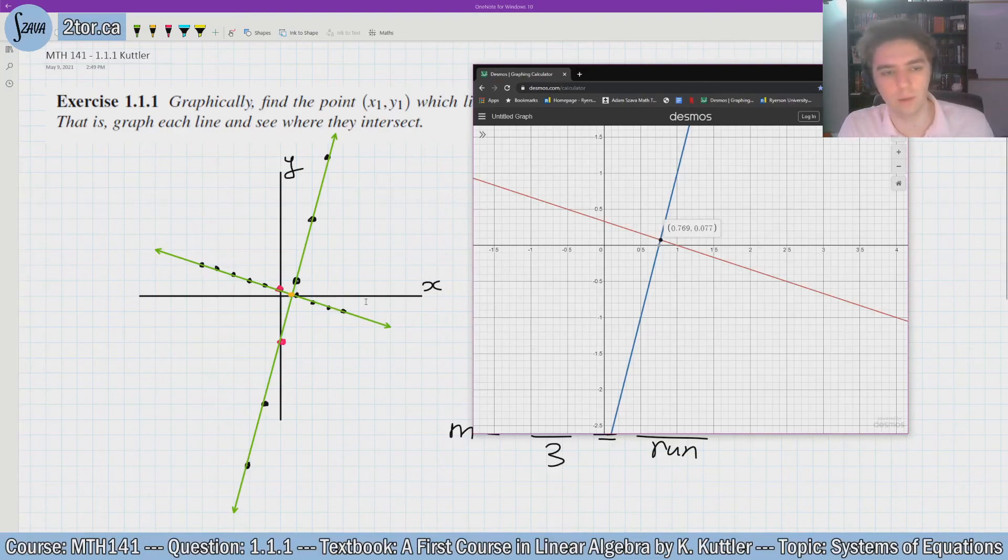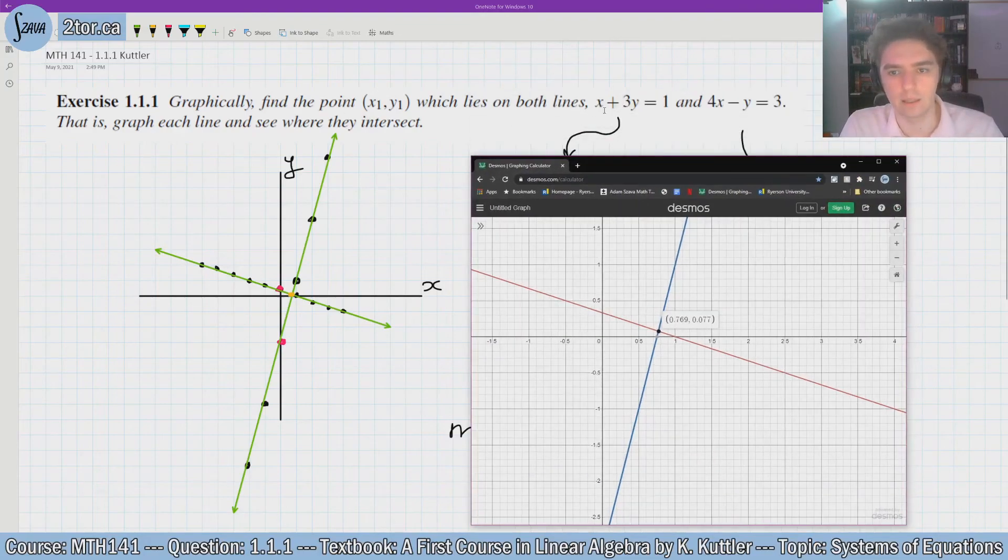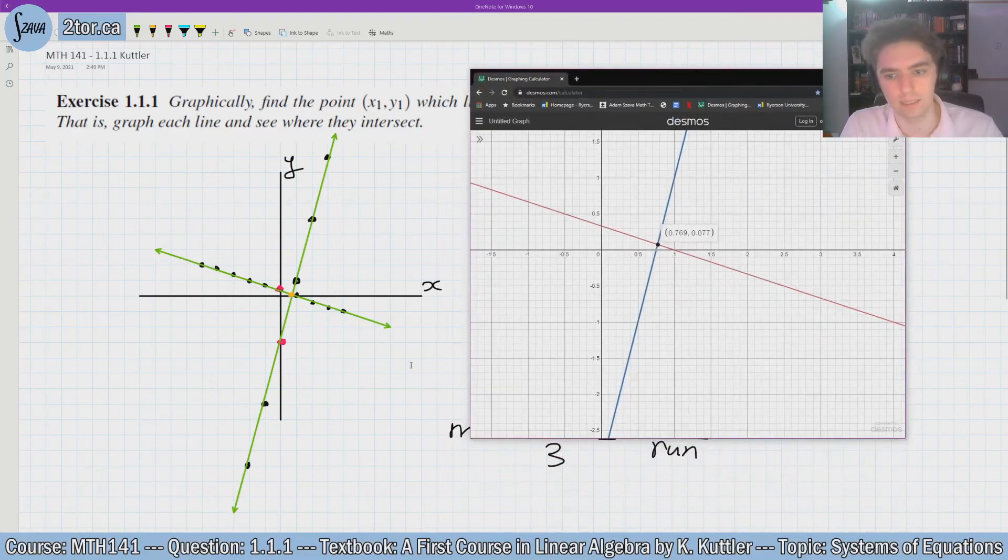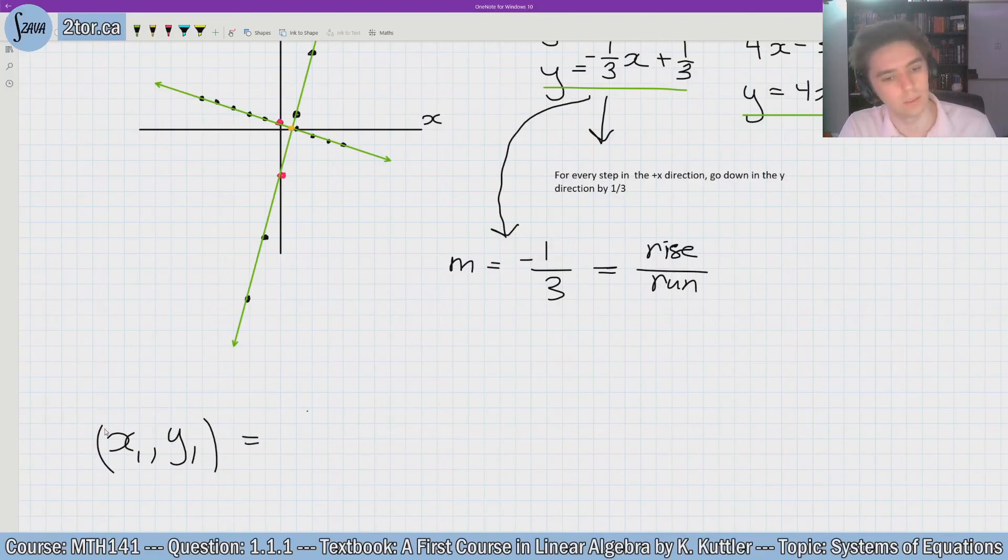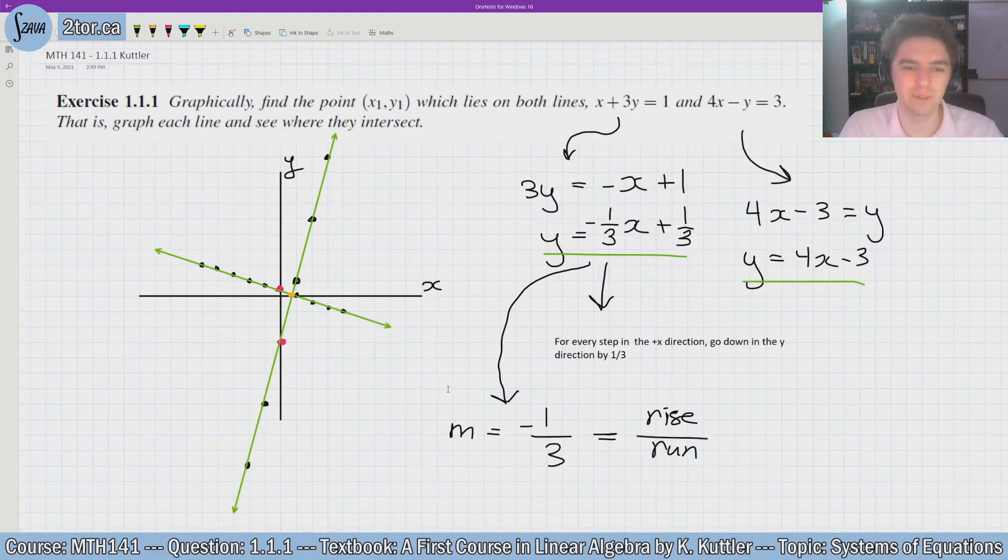So this is our solution. The point (x₁, y₁) which lies on both lines, this line and that line, is the point - let me move this back over - it's going to be the point (x₁, y₁) = (0.769, 0.077). And there you go. Thank you so much for watching, I hope it was helpful. I'll see you next video.